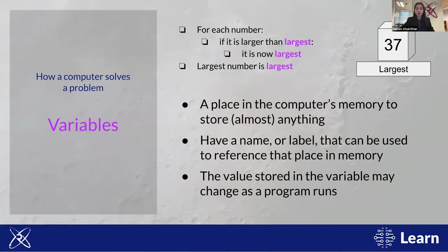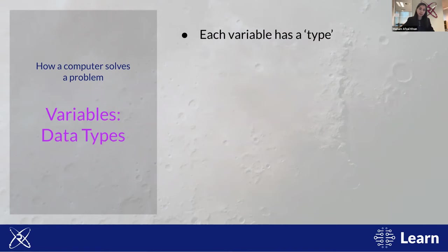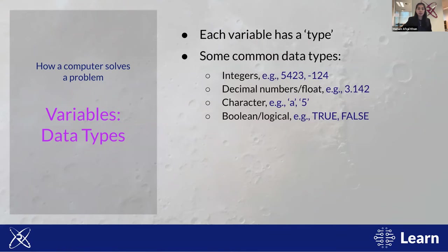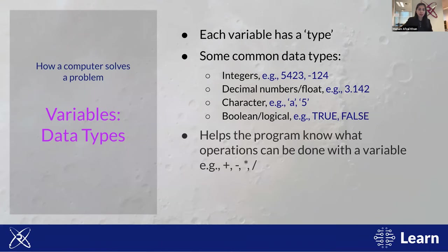Each variable also has a data type. Common data types are: integers — whole numbers, positive or negative; floating point numbers, or floats — decimal numbers, also positive or negative; strings or characters — text data; and Boolean or logical values — true or false. You can also combine these to get lists of numbers, tables, matrices, or more complex structures. Knowing the data type is useful because it helps the program know what it can and should do with that variable.